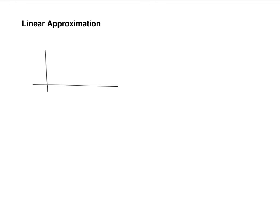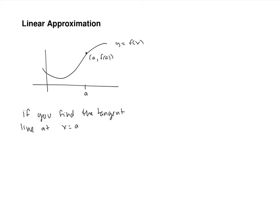Here's the big idea: you can approximate functions using lines. So you have some curvy function, y equals f of x, and you've got some point A, which is the point (A, f(A)). If you find the tangent line at x equals A, f of x is going to be approximately equal to your tangent line for x close to A.